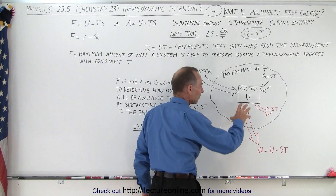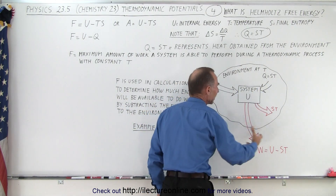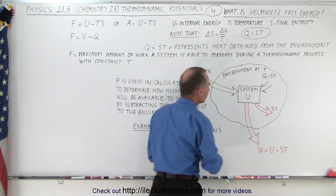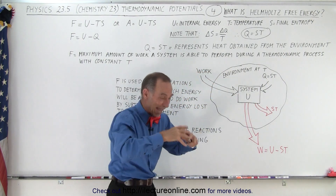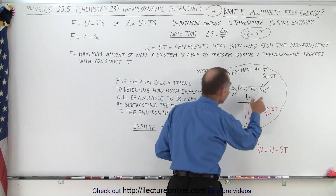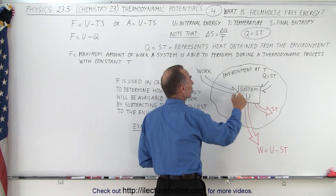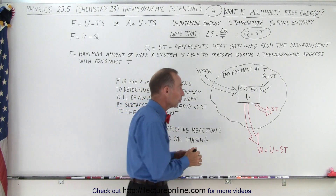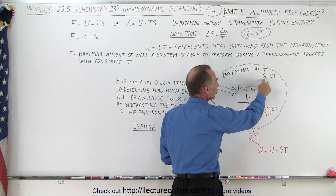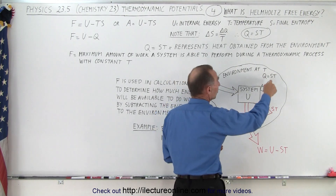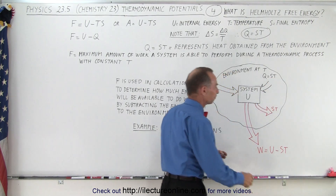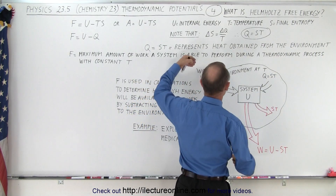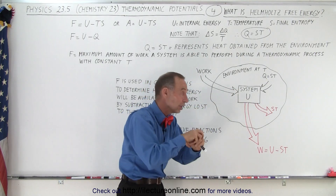Looking at the diagram, we have a system enveloped by an environment, and the environment is kept at a constant temperature T. To change the system, we can put some work into it — when we do work on the system, it adds internal energy. But not all of the internal energy can come from doing work; some of it can be absorbed from the environment. That absorption of energy from the environment we call Q. When Q is positive, we add heat to the system, and it's a product of entropy times temperature.